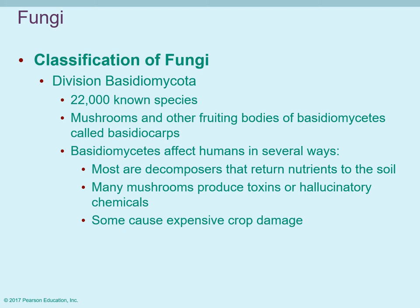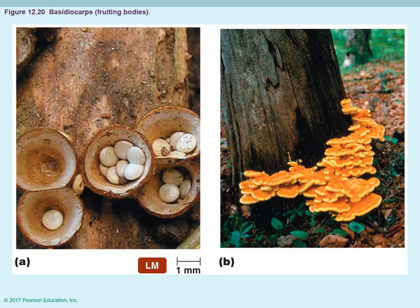The division Basidiomycota has 22,000 known species and includes many mushrooms as fruiting bodies. Many of these are decomposers, so they're very beneficial for nutrient recycling. But if you pick the wrong mushroom, many do produce toxins. Many Basidiomycota can also cause problems in agriculture as plant pathogens and can ruin crops.